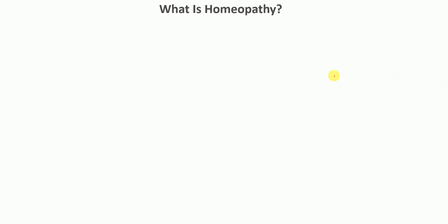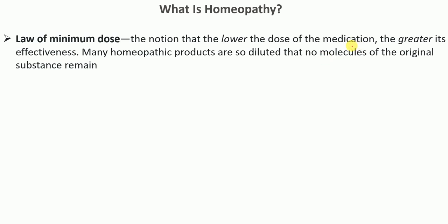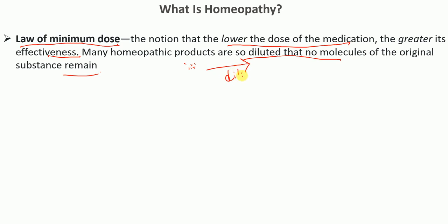The second principle is the law of minimum dose, which means that the lower the dose of the medication, the greater its effectiveness. Many homeopathic products are diluted so that no molecules — or very few molecules — of the original substance remain in the final preparation.